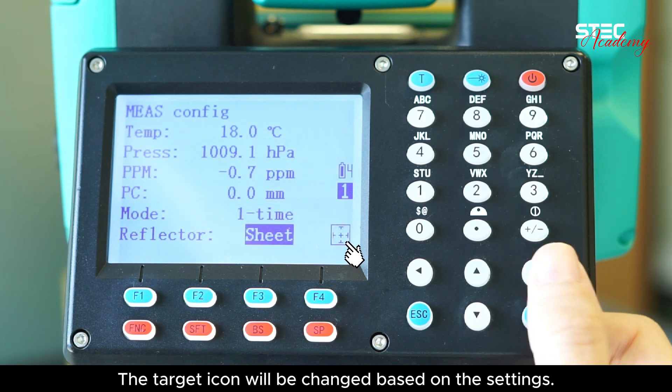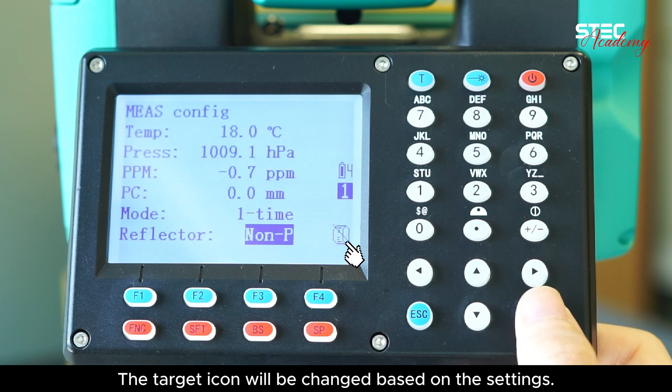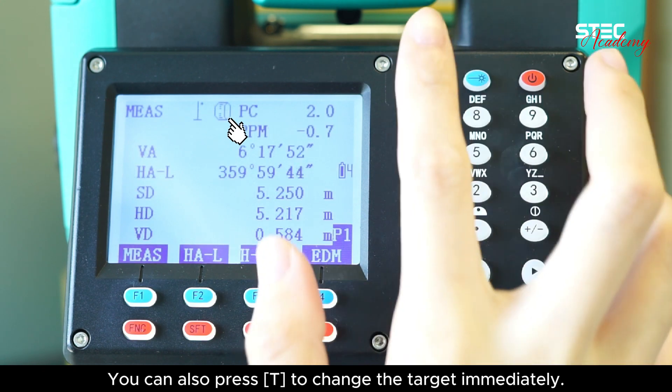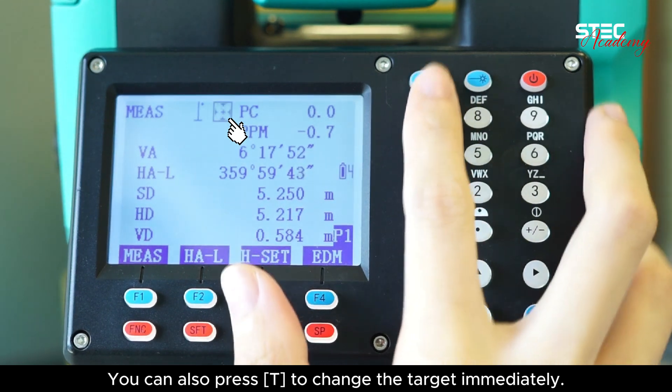The target icon will be changed based on the settings. You can also press T to change the target immediately.